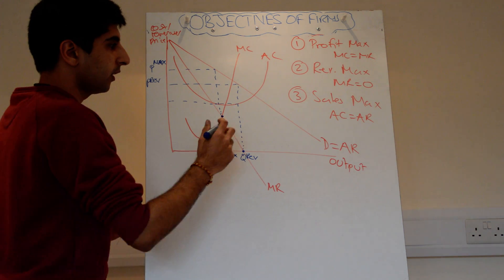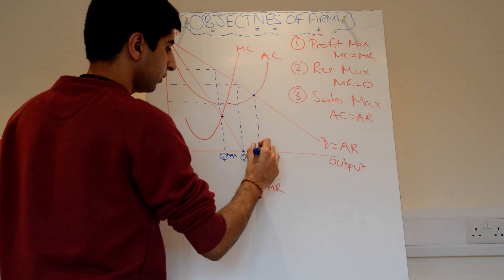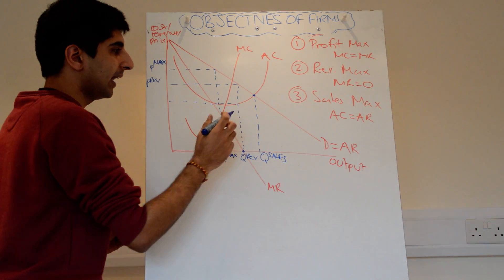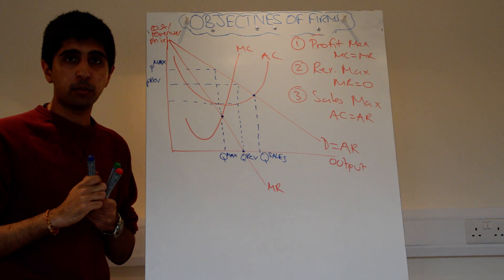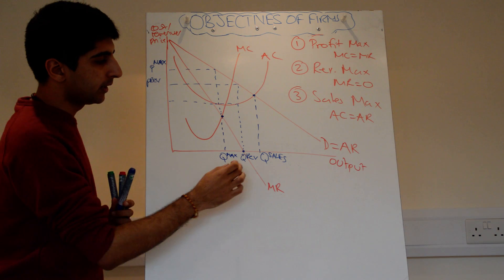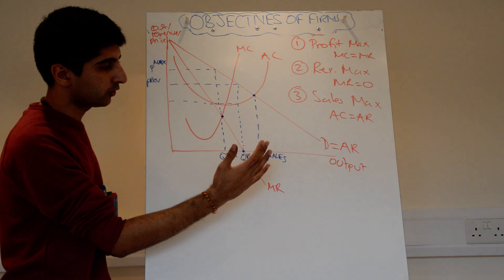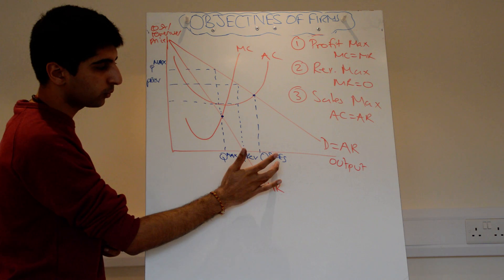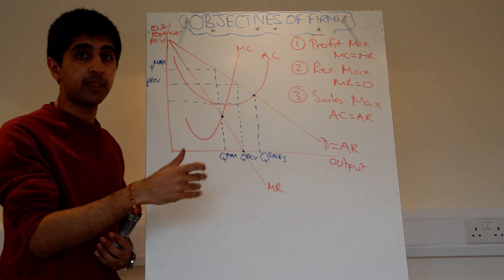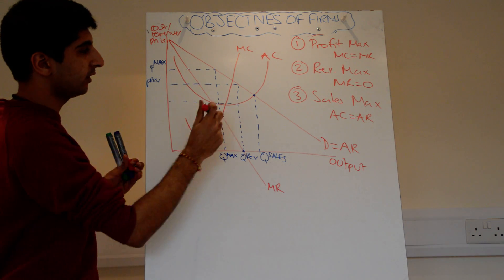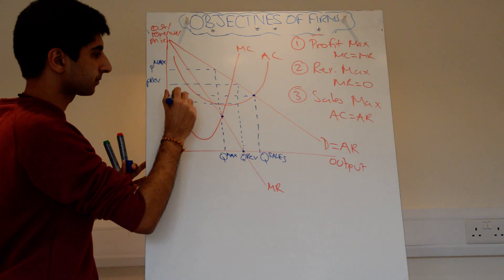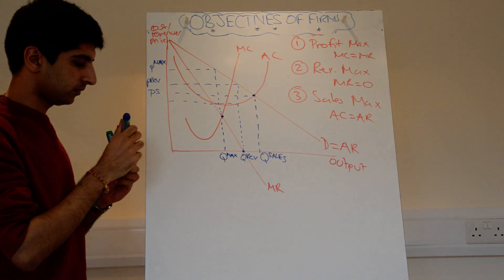Sales maximisation occurs at the breakeven point where average cost equals average revenue — call that Q sales. At that level, there is no supernormal profit, just normal profit. The quantity is at its maximum without making a loss, so firms can fully benefit from economies of scale and managers can demand higher salaries. This gives the lowest price of the three objectives — call it P sales.